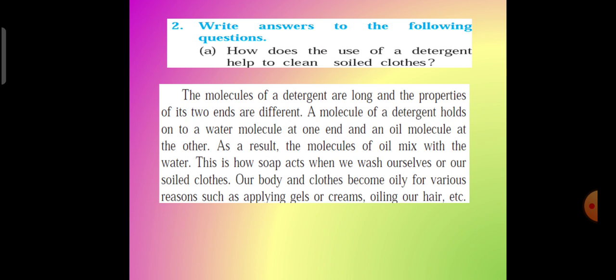Write answers to the following questions. How does the use of a detergent help to clean soiled clothes? The molecules of a detergent are long and the properties of its two ends are different. A molecule of a detergent holds on to a water molecule at one end and an oil molecule at the other.